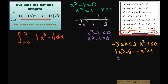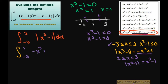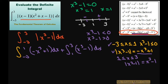Now from one to three, the absolute value of x cubed minus one is positive, so that equals x cubed minus one. Now we can set up our integral using the additive property. The first piece is the integral from negative three to one of negative x cubed plus one dx, and then we add the integral from one to three of x cubed minus one dx.